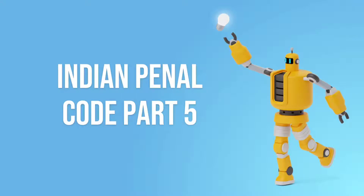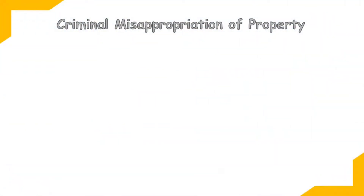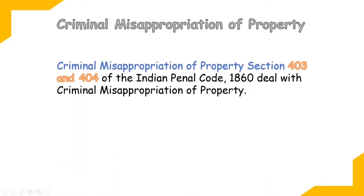Alright guys, today we have to start with Indian Penal Code Part 5. We will start our discussion with criminal misappropriation of property, which is a very simple topic. We will be starting from section 403 and ending on section 404.